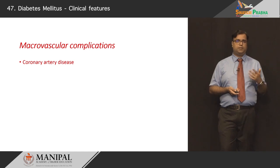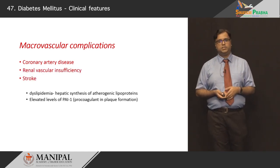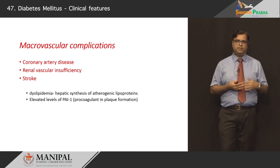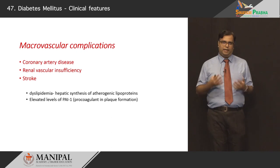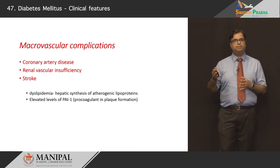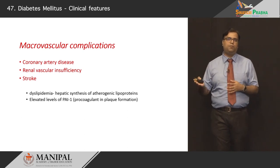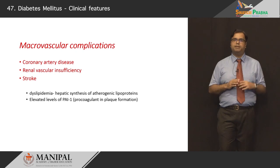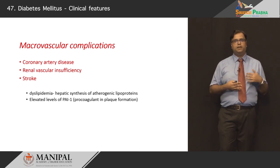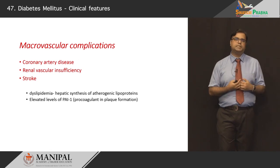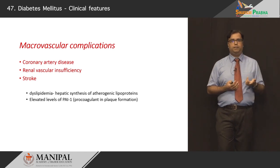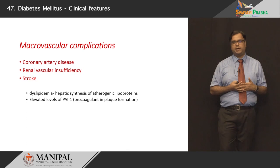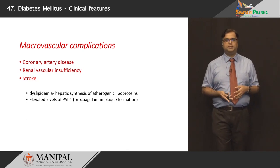Macrovascular complications can include coronary artery disease, renal vascular insufficiency, and stroke. Much of this has to do with dyslipidemia — under absolute or relative insulin deficiency and a hyperglycemic state, selective atherogenic lipoproteins are elaborated more by the liver than usual. This preferential treatment results in lousy cholesterol building up within vessel walls, resulting in stroke. Also, levels of plasminogen activator inhibitor-1 (PAI-1) are elevated, which acts as a pro-coagulant and potentiates thrombogenic potential in diabetes mellitus.